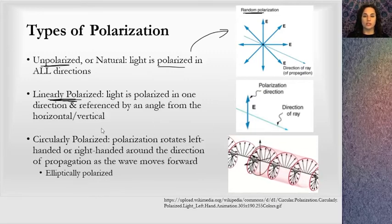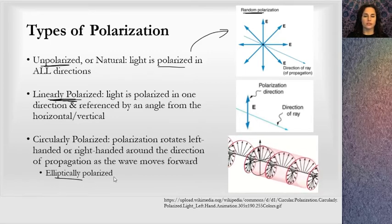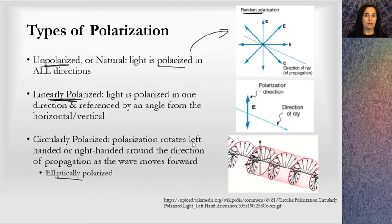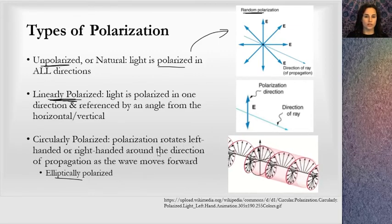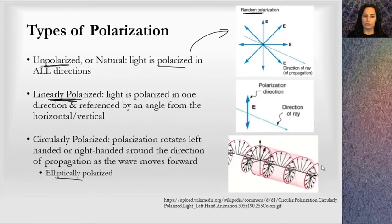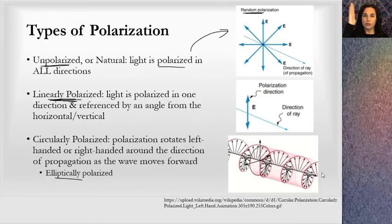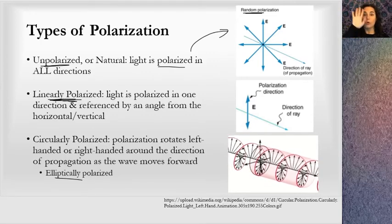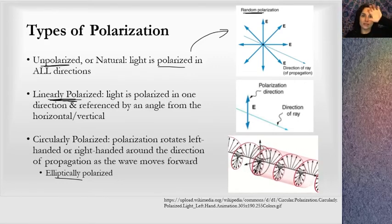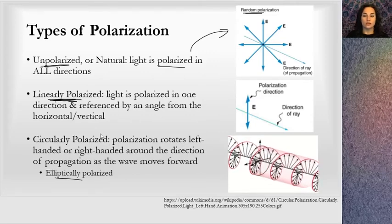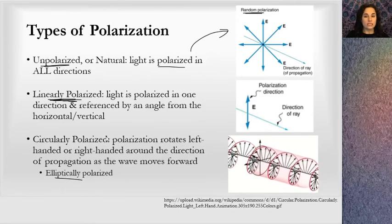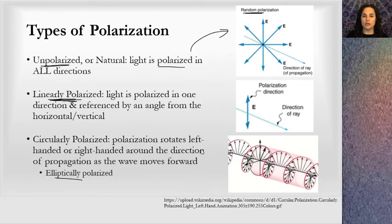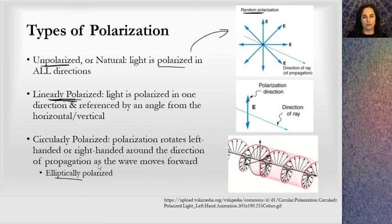The last type of polarization I'll mention is circularly polarized, which is also related to elliptically polarized. That means the polarization rotates left-handed or right-handed around the direction of propagation. If you look at this light wave coming at you, the electric field either moves in a clockwise or counterclockwise fashion around the axis — that's what we call right-handed or left-handed rotation. I'm going to focus on random and linear polarization; you can pursue circularly polarized light on your own.